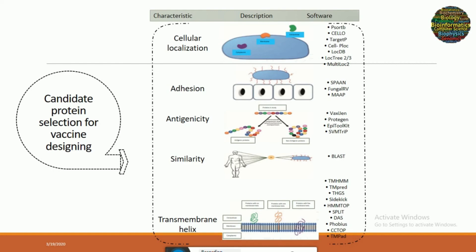What are the parameters for selection of a protein? The characteristics are given on one side, with a graphical description in the middle and the software used on the other side. The first parameter is subcellular localization — this means where the protein you are selecting is located. For that purpose we use different software such as PSORT, CELLO, TargetP, CellLoc, LocDB, etc. Proteins that are extracellular or present on the membrane are preferred for vaccine design, because proteins from the pathogen that come in contact with human receptors are suitable for designing the vaccine.